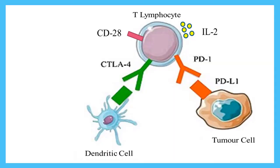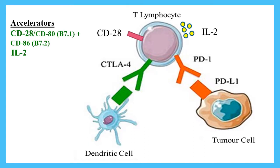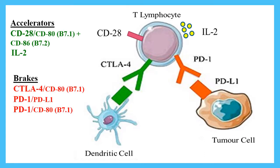The functioning of T cells is regulated by a system of accelerators and brakes. T cells contain two major receptors on the surface which function as brakes: CTLA4 and PD1. These receptors are called checkpoints.